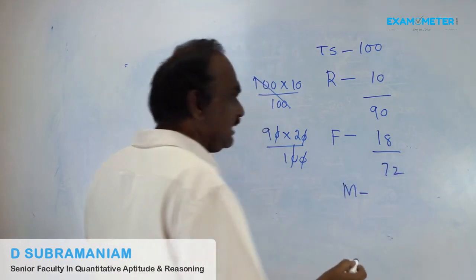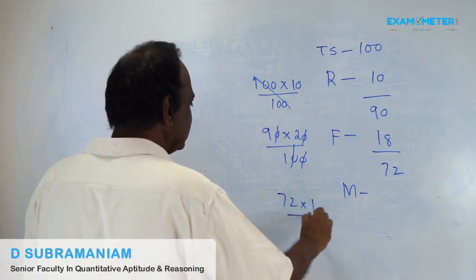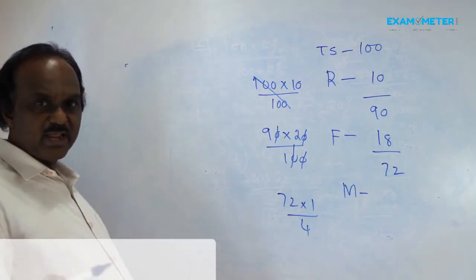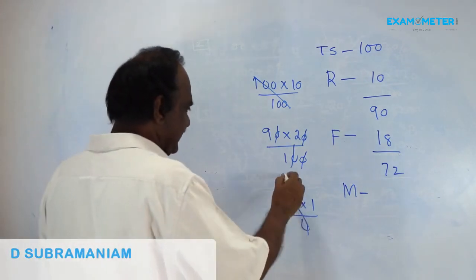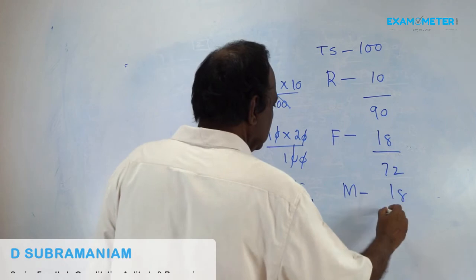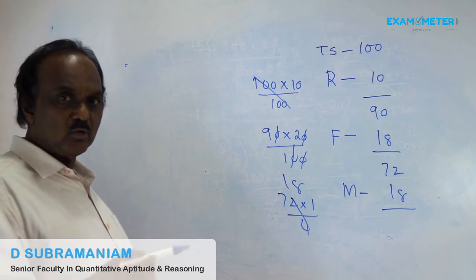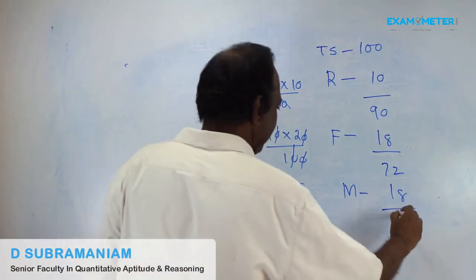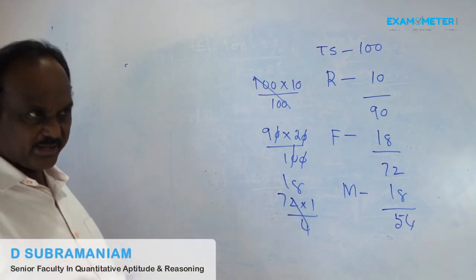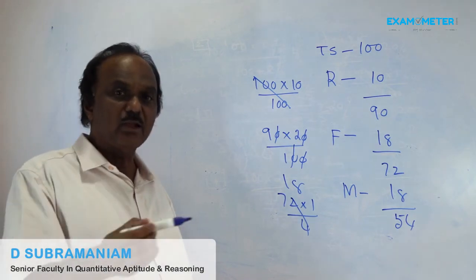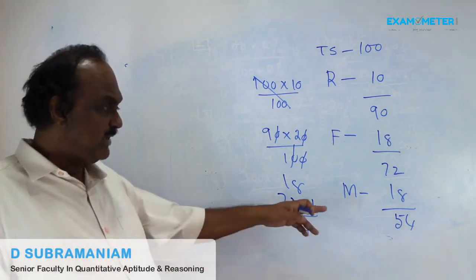25% of the balance on miscellaneous. 25% fraction is 1/4, so divide 72 by 4, which gives 18 rupees spent on miscellaneous. Out of 100 rupees: 10 spent on rent, 18 on food, 18 on miscellaneous. Savings are 54.